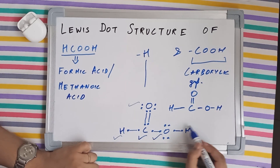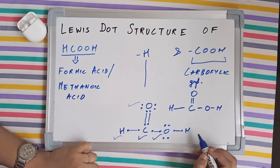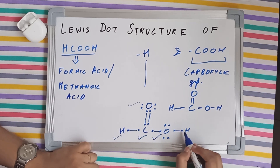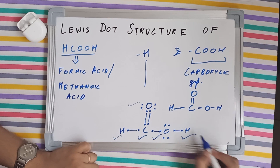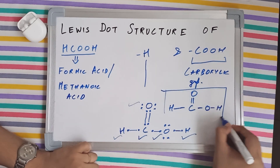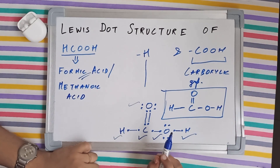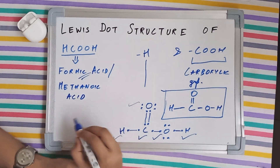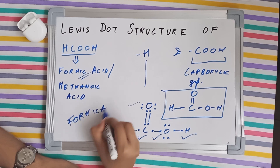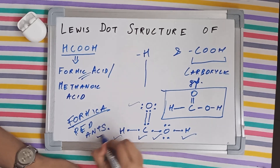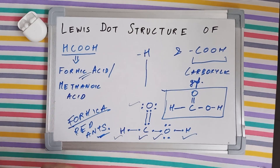For carbon, counting after bond formation: one two three four five six seven eight — it has completed its octet. The oxygen in OH also completes its octet: one two three four five six seven eight. And the hydrogen in OH completes its duplet with two electrons. This is the complete Lewis dot structure of methanoic acid, also known as formic acid — named from the Latin 'formica,' meaning red ants. Thank you for watching!